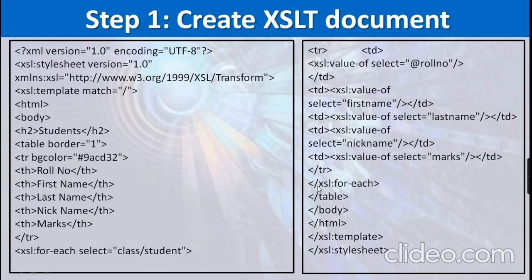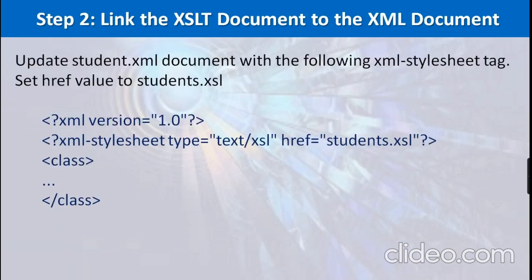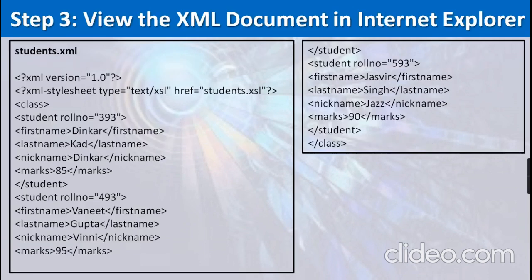After retrieval of all records, we close the 'xsl:for-each' loop, then close the table, close the body, close the HTML tag, close the 'xsl:template', and finally close the 'xsl:stylesheet'. This completes the first step — creation of the XSLT document. Save this document as student.xsl and move to the second step.